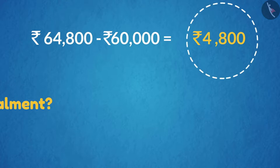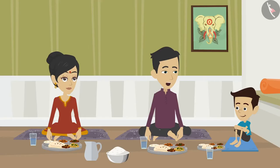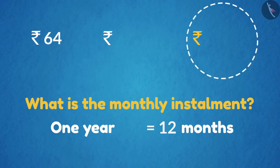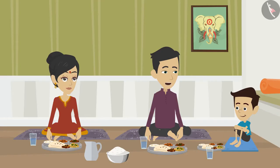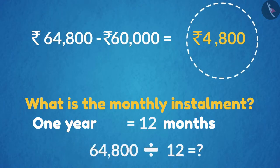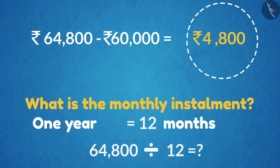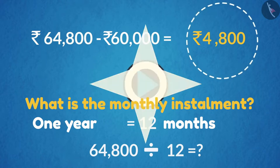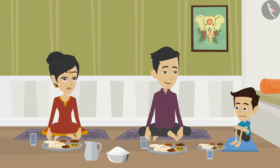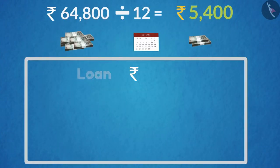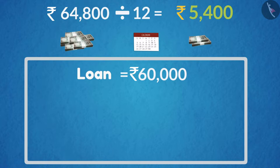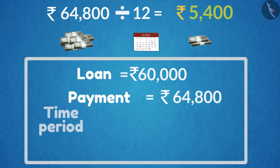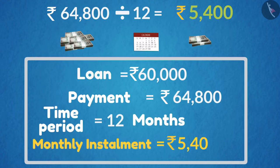But dad, how do we know the amount we have to pay in a month? How many months are there in a year? 12. Since I have taken the loan for one year, we will divide the total amount by 12. Tell me, how much do we get if we divide 64,800 by 12? You can pause the video if you want and think about it. 5,400 — absolutely correct! So that means if we take a loan of rupees 60,000 as our principal amount and repay 64,800 rupees in one year, then we have to deposit 5,400 rupees every month in the bank, which is also called an installment.